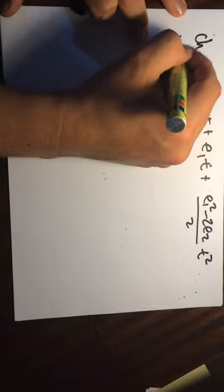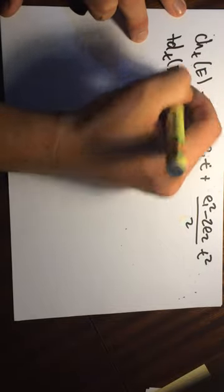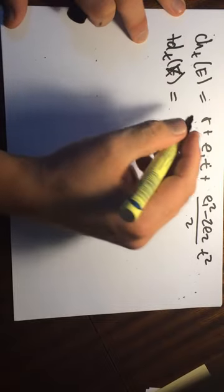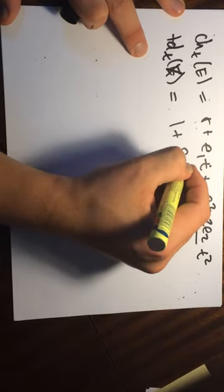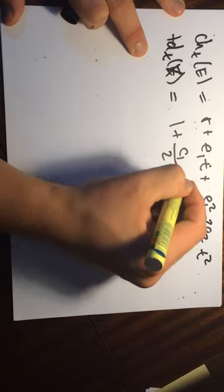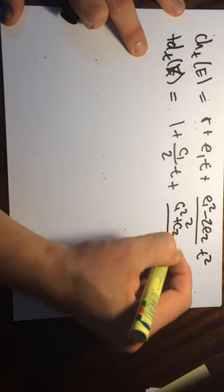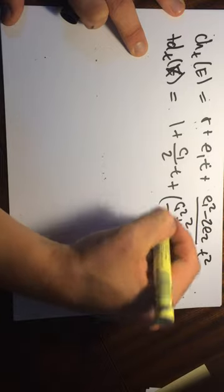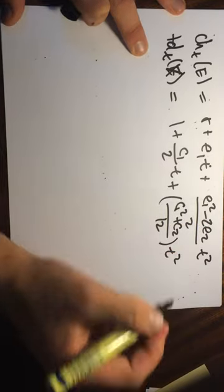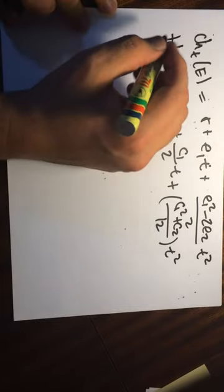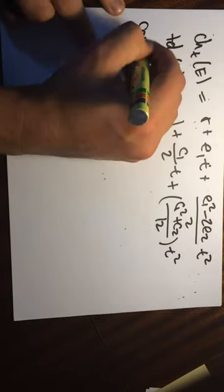And then we have the Todd class of X. So this is equal to 1 plus the first Chern class of X times t plus C_1 squared plus C_2 divided by 12 times t squared. And then there's some special cases to consider.